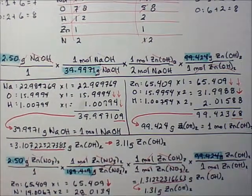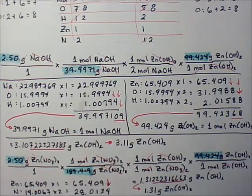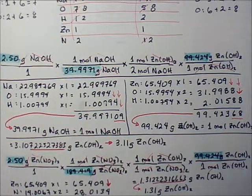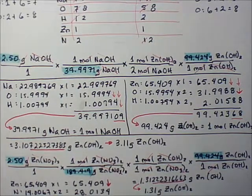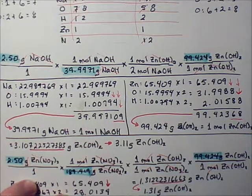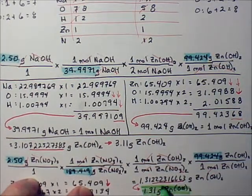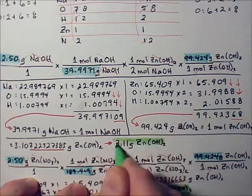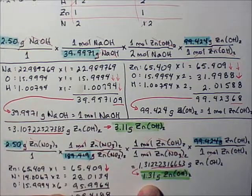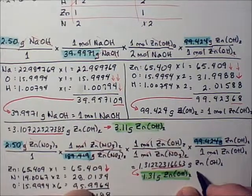That's not the whole problem yet. Now let's take a look here. We have two different masses for zinc hydroxide. We've got 1.31 grams of zinc hydroxide and 3.31 grams of zinc hydroxide. The smaller number, the smaller of those two numbers for this product is the theoretical yield.